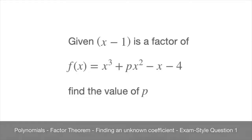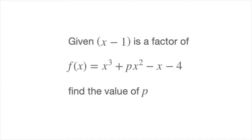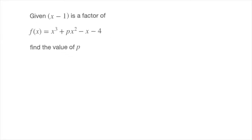In this tutorial, we learn how to solve a typical exam-type question involving the factor theorem for polynomials. We're going to work through two examples. The first is the one we see here. We're given x minus 1 is a factor of the polynomial f of x, which equals x cubed plus px squared minus x minus 4, and we are asked to find the value of p — the coefficient multiplying the x squared term.